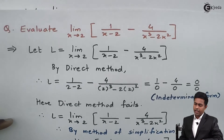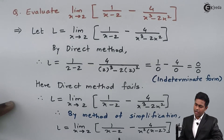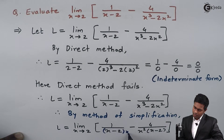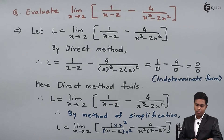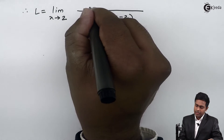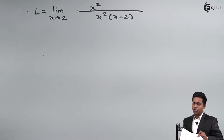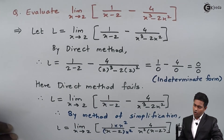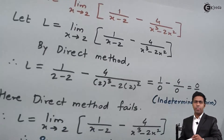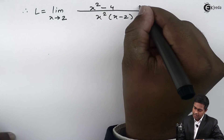To get x squared times (x minus 2) in the first term, I multiply by x squared — both numerator and denominator — so the numerator becomes x squared. In the second term we already have x squared times (x minus 2), so I just copy down the minus 4. The combined numerator is therefore x squared minus 4.